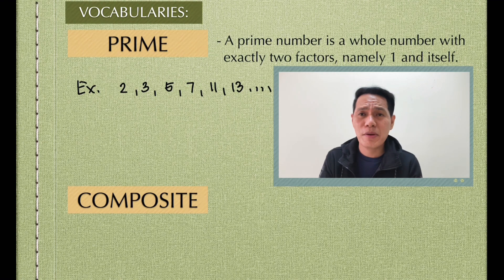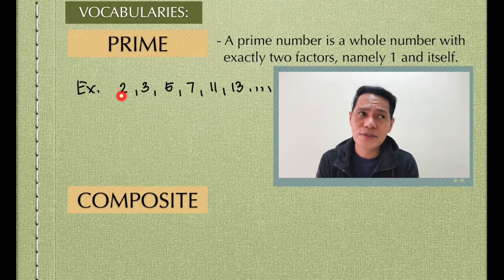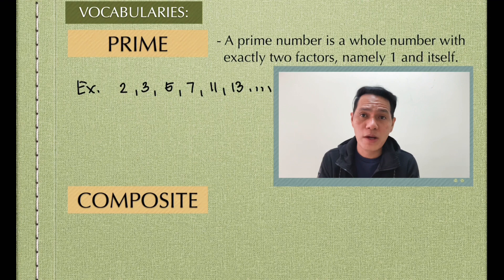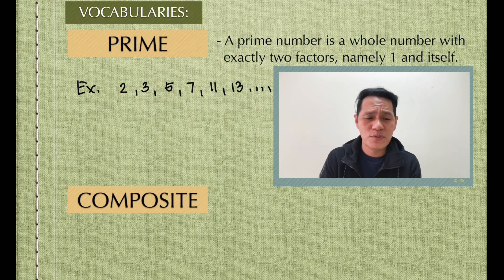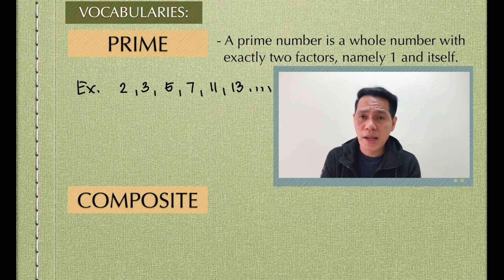Why are these prime numbers? Basically, when we say 2, the factors are only 1 and 2. For 3, we only have 1 and 3. For 5, it's 1 and 5. So basically all of these numbers — 2, 3, 5, 7, 11, 13 — are prime numbers.